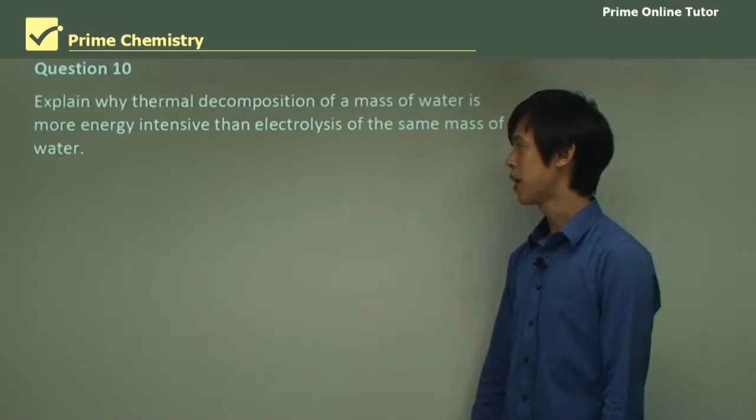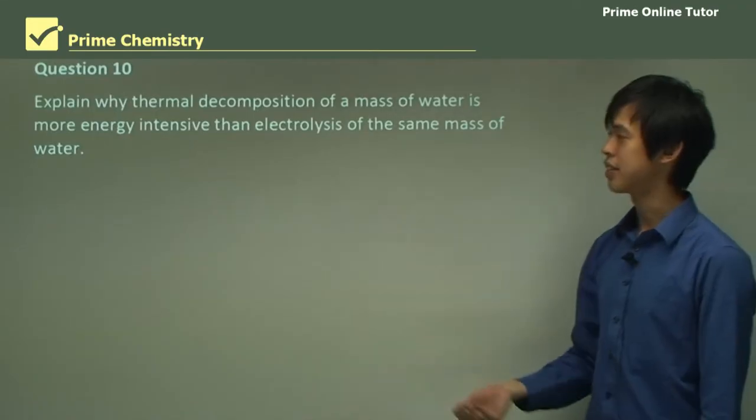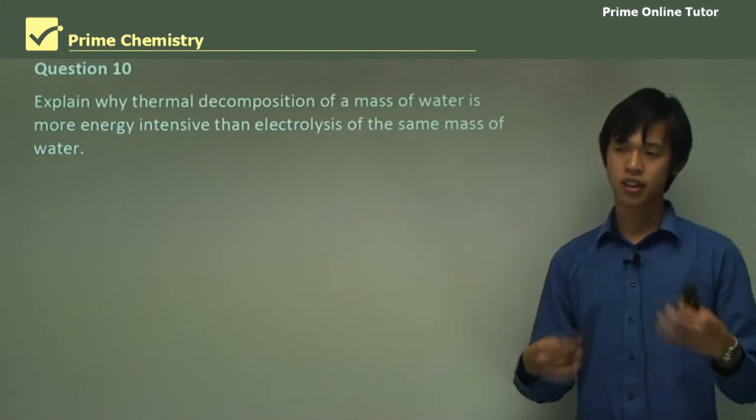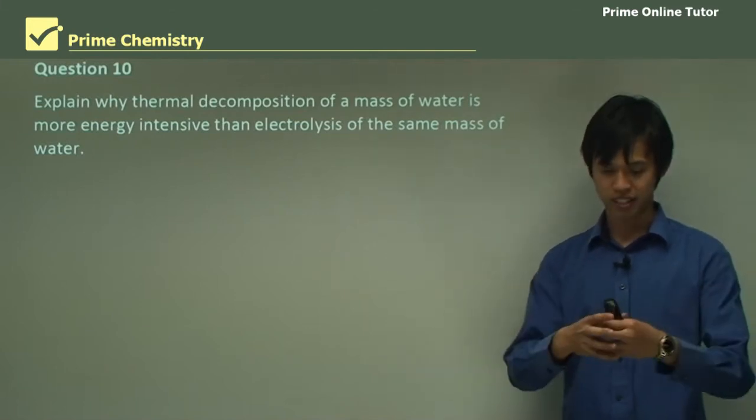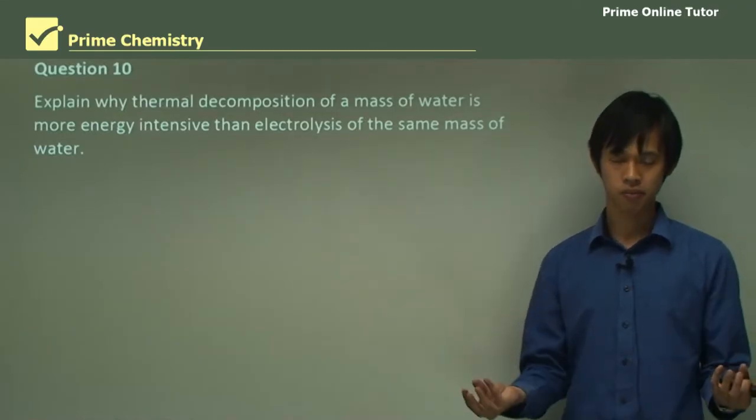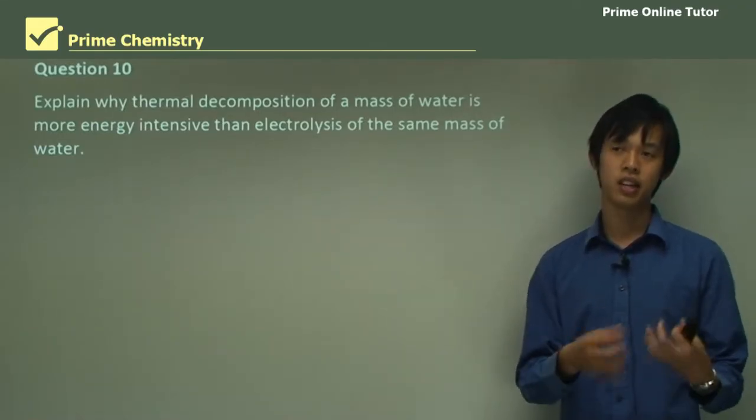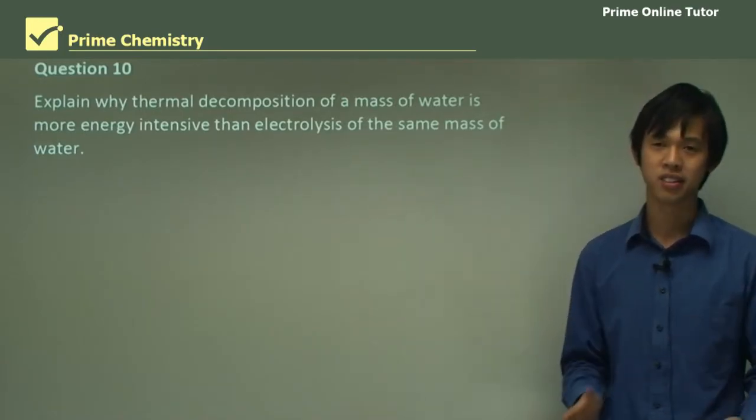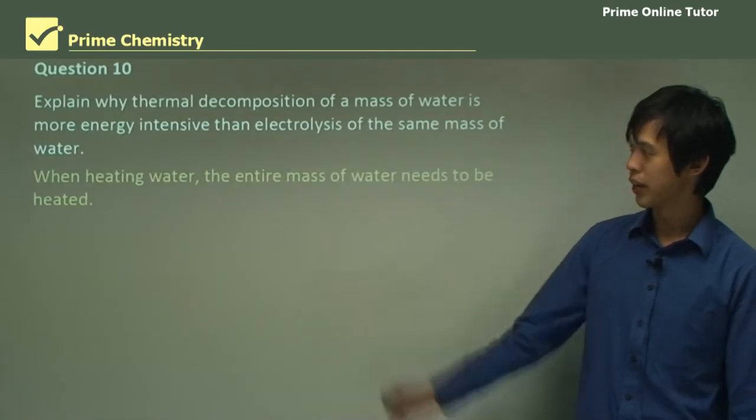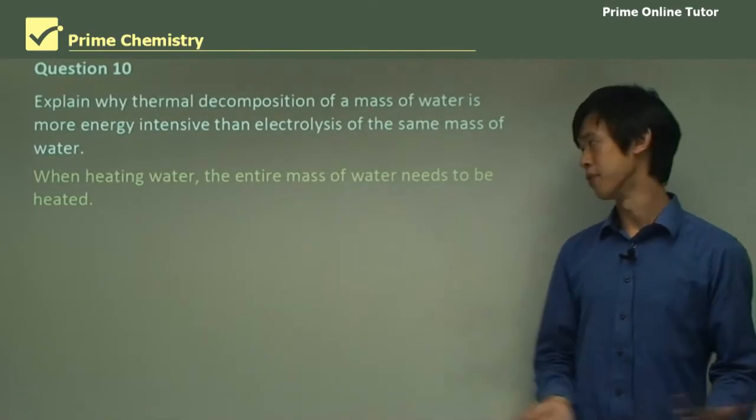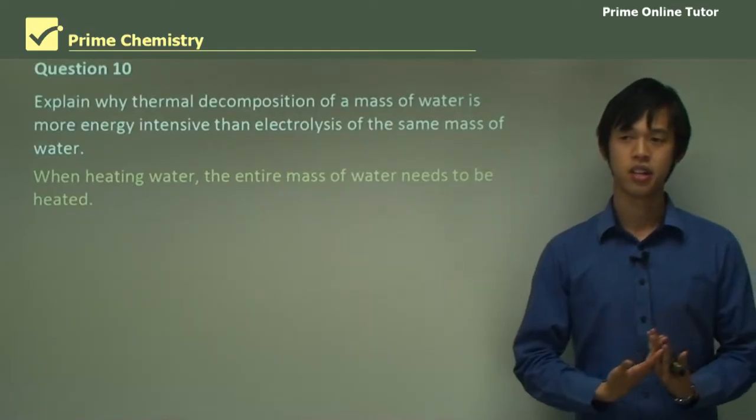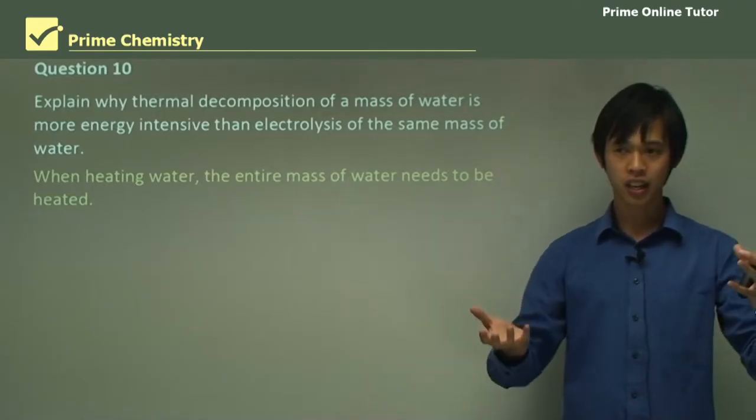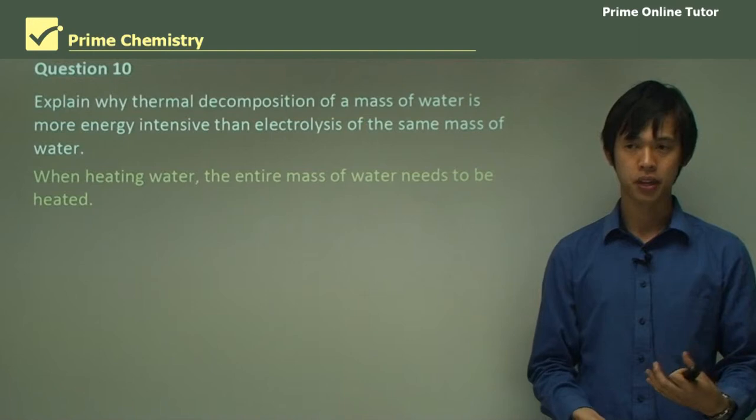Question 10: Explain why thermal decomposition of a mass of water is more energy intensive than electrolysis of the same mass of water. So if I was to turn, say, 100 grams of water into hydrogen and oxygen by electrolysis, that would take me a lot less energy than if I was to do it by heat, if I was just to heat it up and hope that it works. So when heating the water, the entire mass of water needs to be heated. I can't focus that heat on one molecule and break it up. I have to heat the whole thing, and then something will happen.